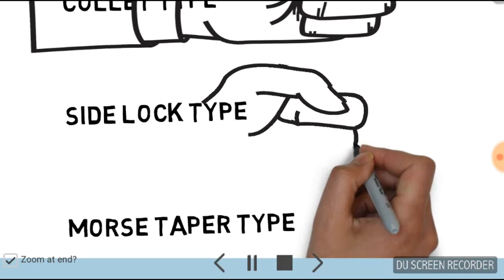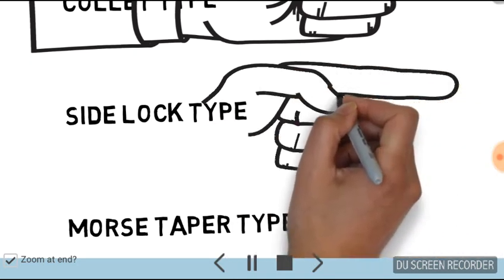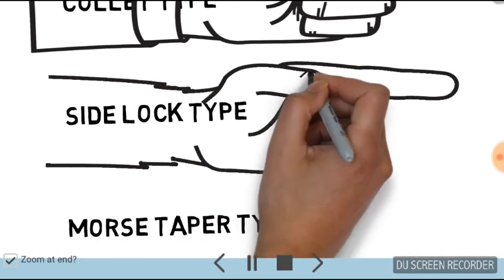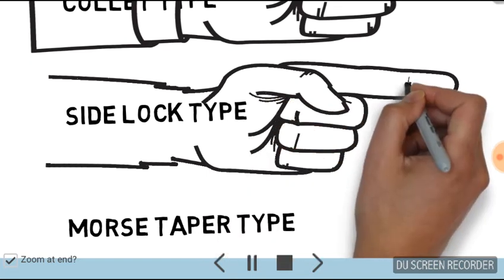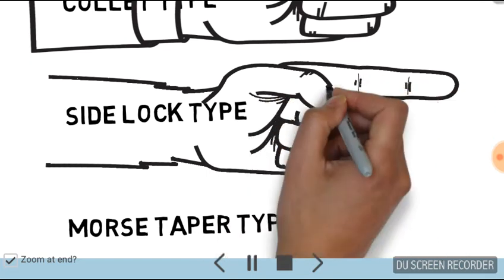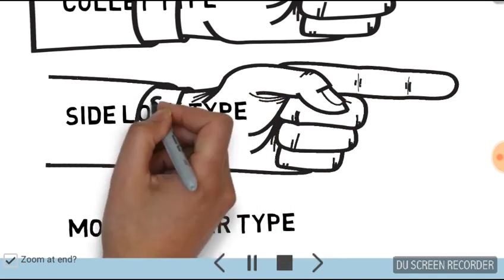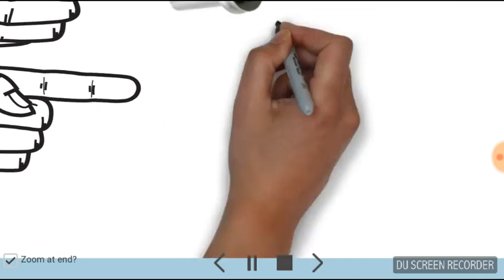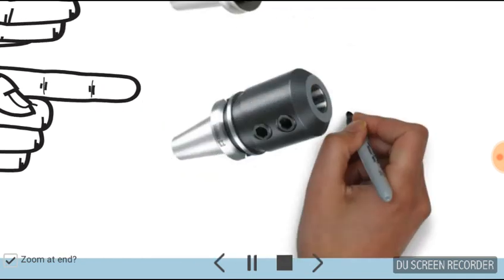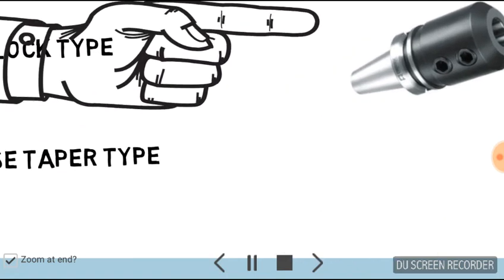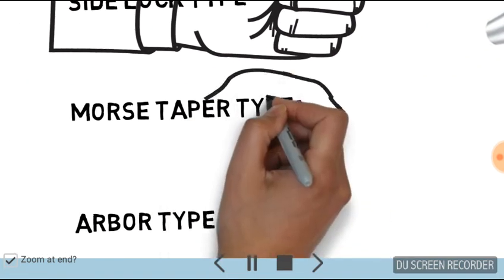Now we will talk about the side lock type cutter holder, in which we use the side lock or nut from the side for holding the tool inside the tool holder.